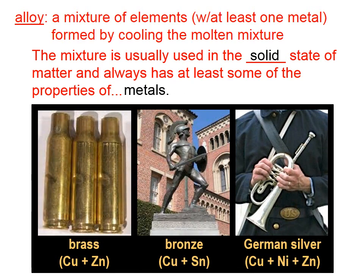Here are a few examples of alloys. Brass is a mixture of copper and zinc, used historically for shell casings. Bronze is a mixture of copper and tin. And German silver, somewhat ironically, contains no silver. It does contain, however, copper and zinc.